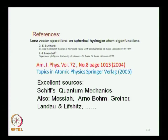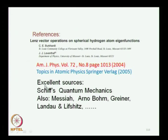Some recommended references: there is a very nice article by Burkhardt and Leventhal, first published in the American Journal of Physics in 2004, and subsequently they published a book by Springer — a very nice reference for the Lenz vector properties of the hydrogen atom. The usual quantum mechanics books — Schiff, Messiah, Arnaud Bohm (not David Bohm, but his son Arnaud Bohm), Greiner's book, Landau and Lifshitz — they all have this, and you can refer to any one of these for the main results we have discussed.